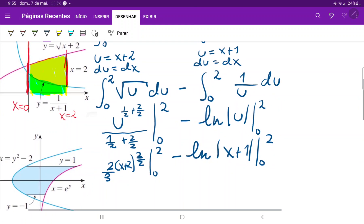So 2 thirds times 4 to the power of 3 halves, and then when we put minus the lower boundaries, minus 2 thirds times 0 plus 2, which is just 2 to the 3 halves.